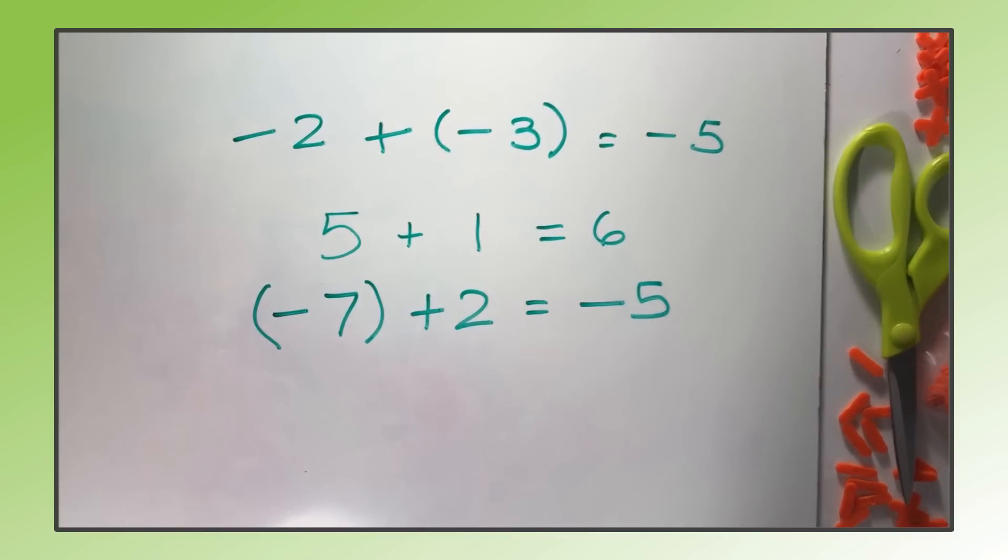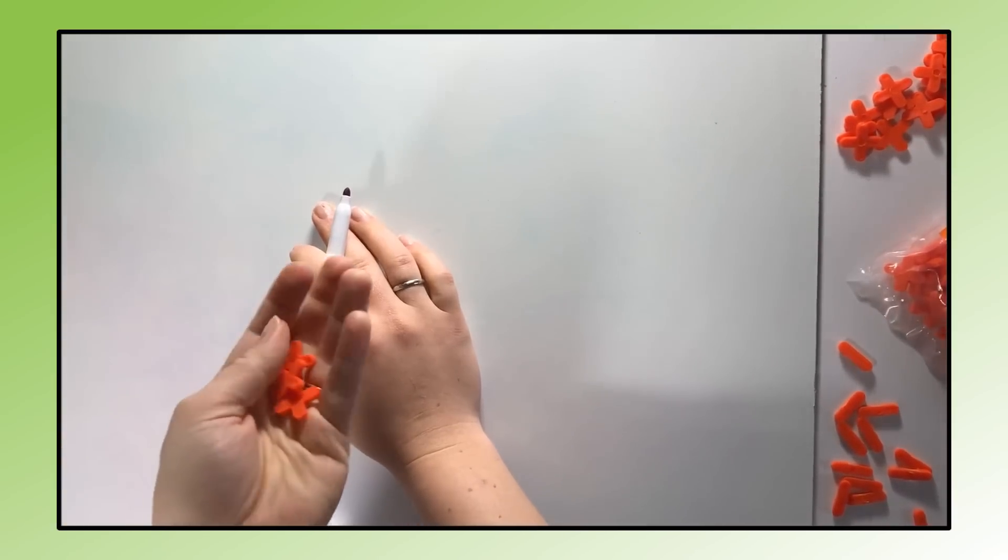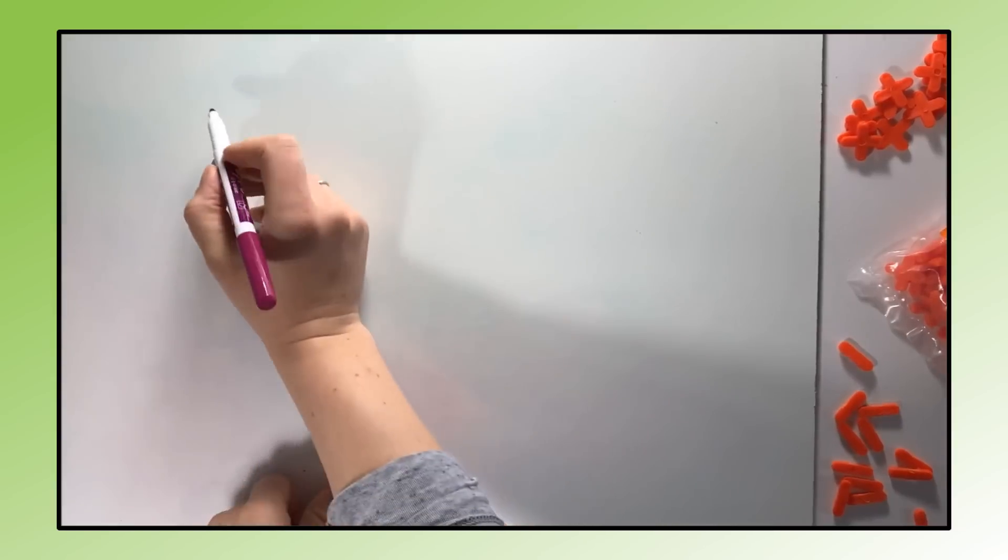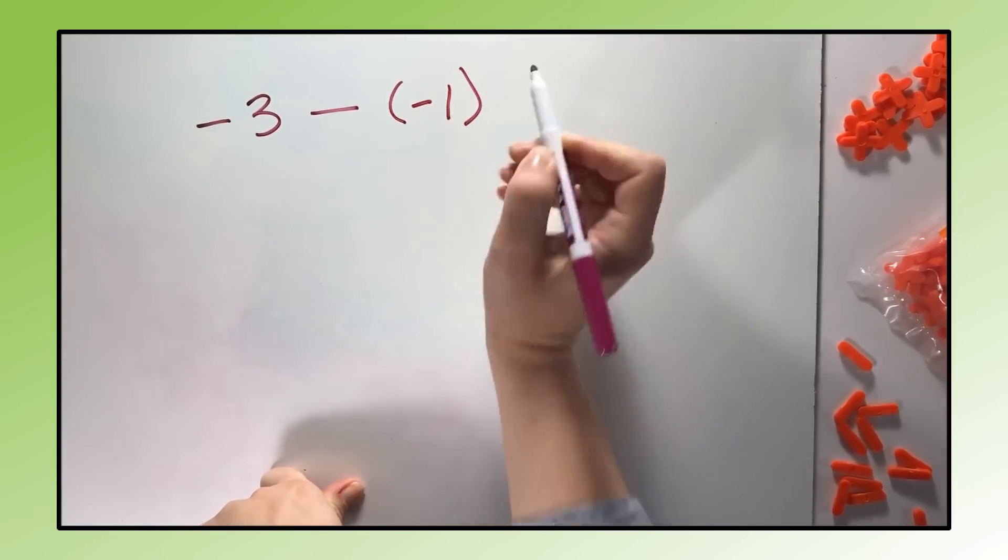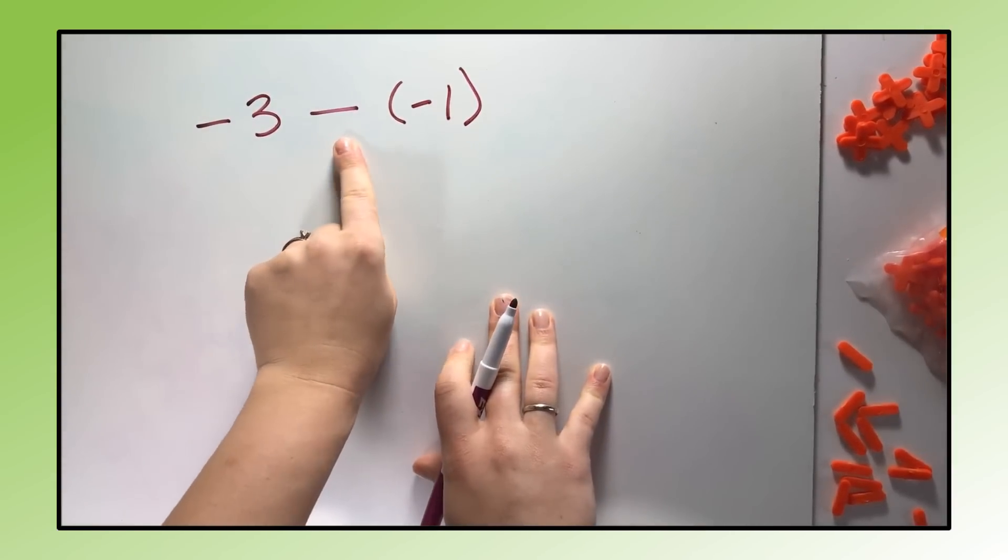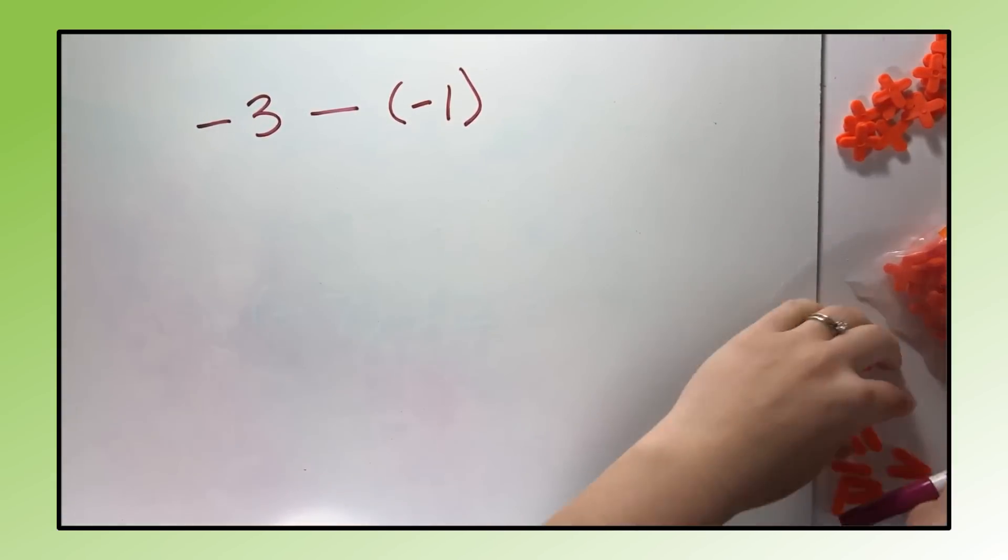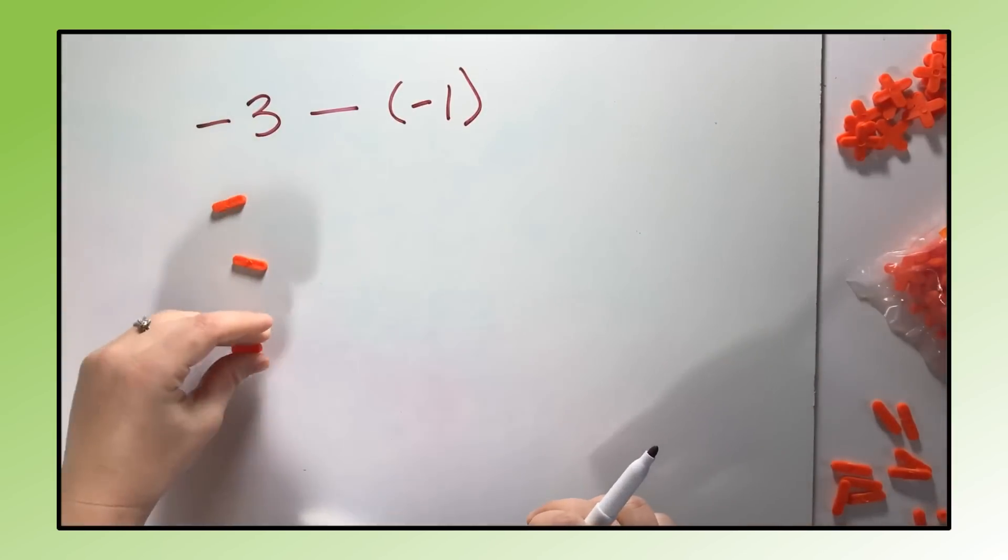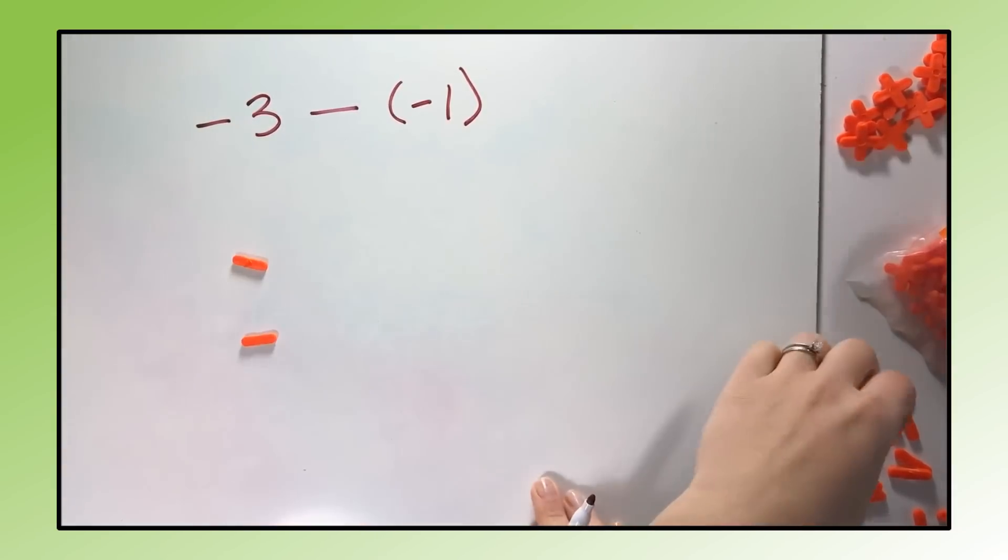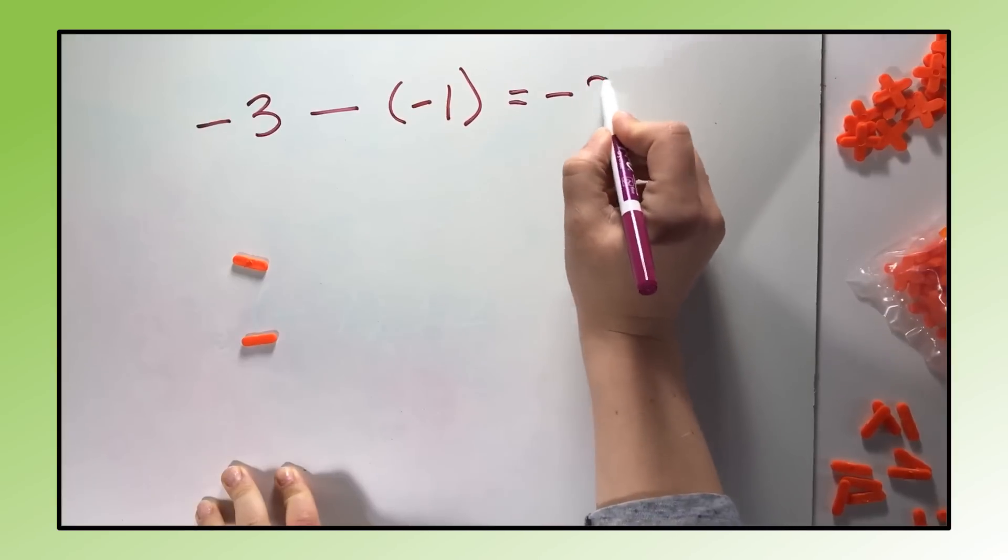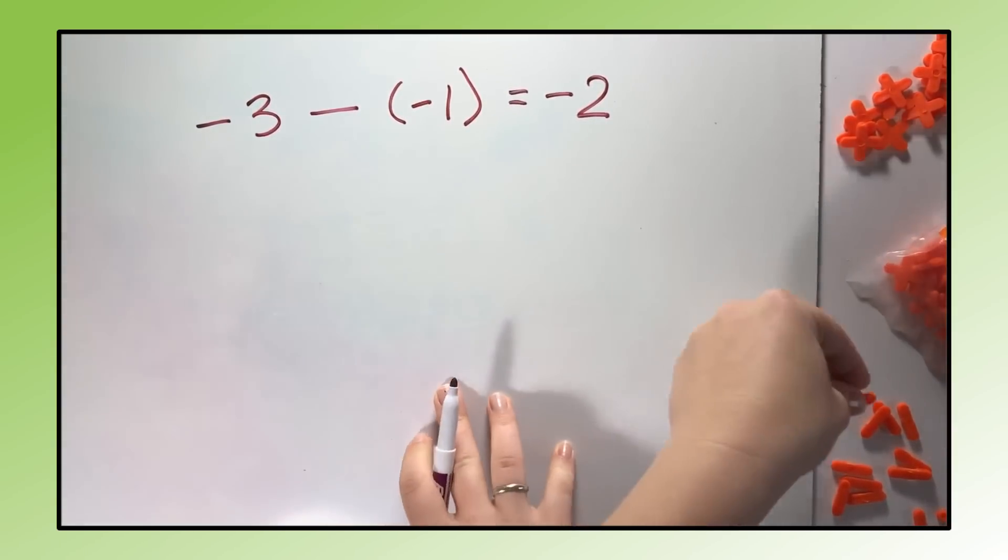When we're subtracting, we're going to use the zero pairs a little differently, so make sure you understand these examples before you try this with your class. Try this one first: negative three minus negative one. We're going to go back to their first understanding of negatives. When they learned this in first grade, it was take it away - removing something. So if we start with negative three and then we take away a negative one, take away one of those negatives, what do we have left? A simple example like this helps them get the idea and get started. Then you want to try one where they have to use the zero pairs.